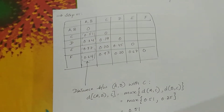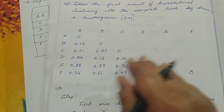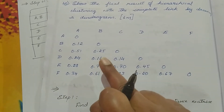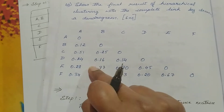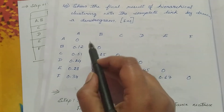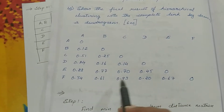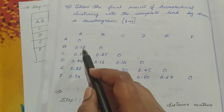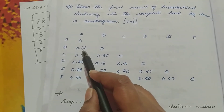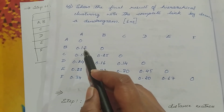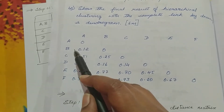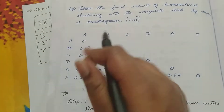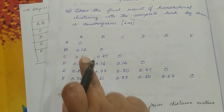In the first step, we identify which value is minimum — that is, which has the least distance. Here 0.12 is the smallest among all the values, meaning A and B are nearest. Since 0.12 is the minimum, A and B can be grouped into one cluster.